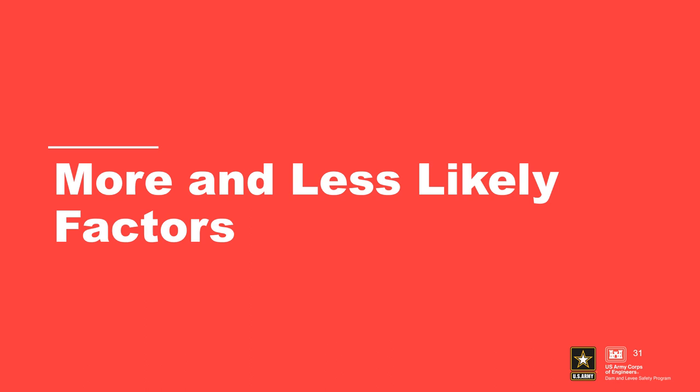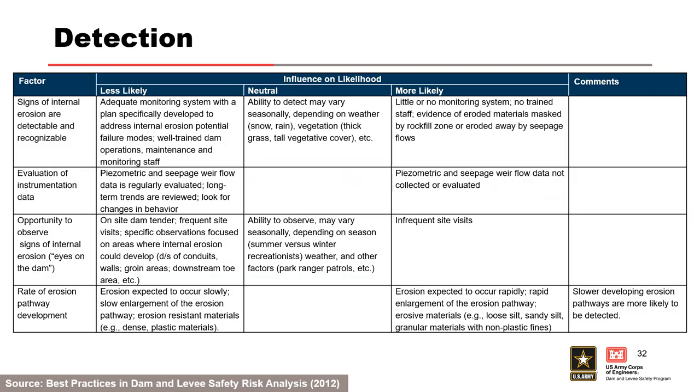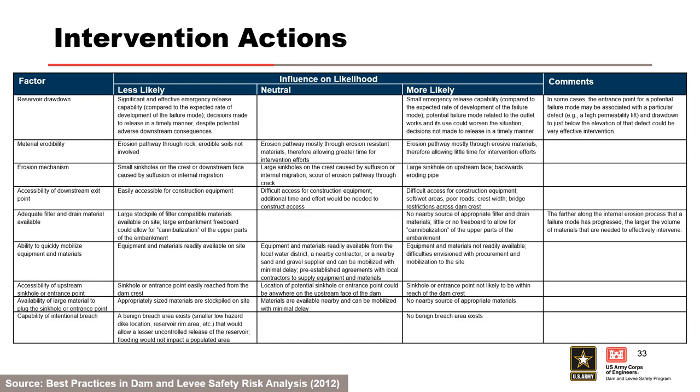The following table from the best practices manual can be used to help assess the likelihood of unsuccessful detection and intervention. It can be used as a starting point, but the risk team must develop project-specific more likely and less likely factors to guide subjective probability estimation. The factors in one portion of the table address detection, and the factors in another portion address physical intervention actions.